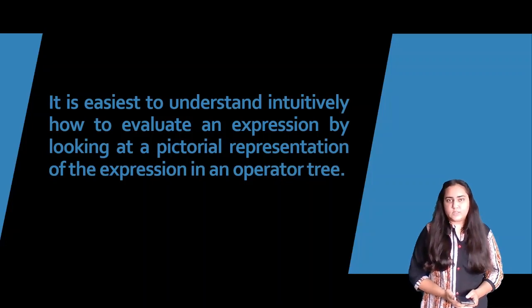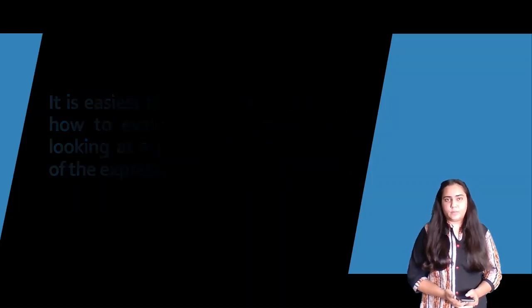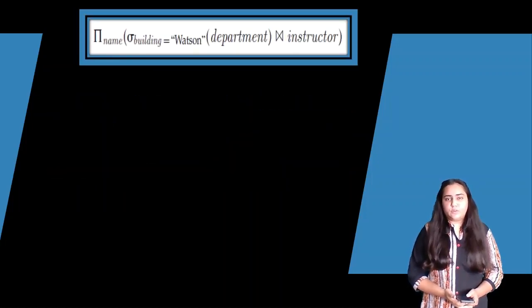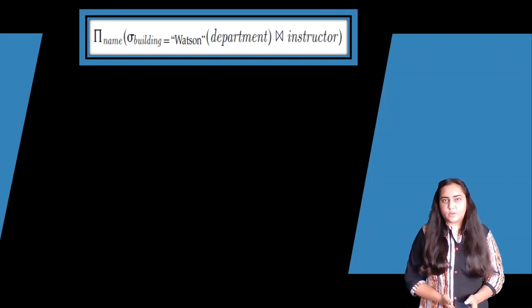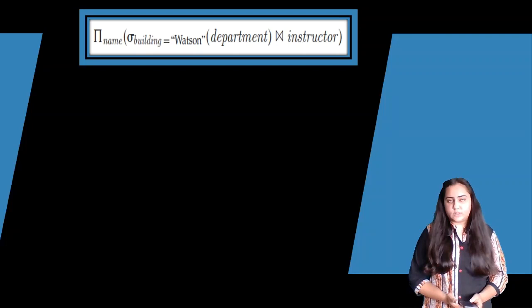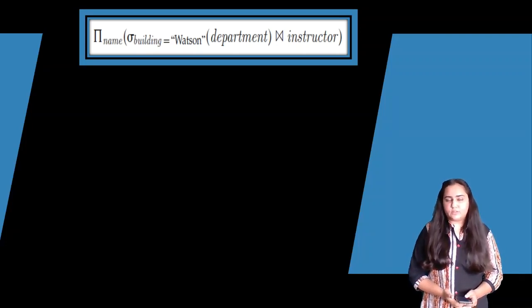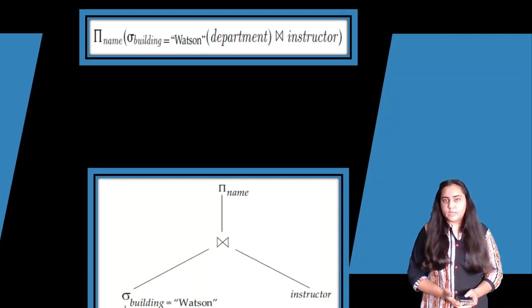It is easiest to understand intuitively how to evaluate an expression by looking at a pictorial representation of the expression in an operator tree. Let's see with an example. If you have a query where you are trying to find out all the departments present in the building Watson, taking a natural join of that with instructor, and then taking out the names from there, you can convert it into an operator tree.